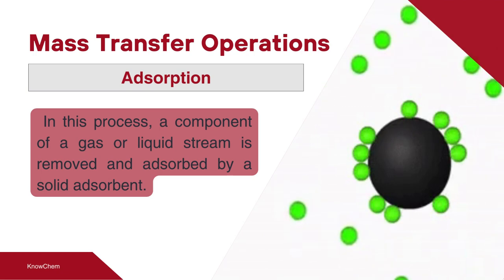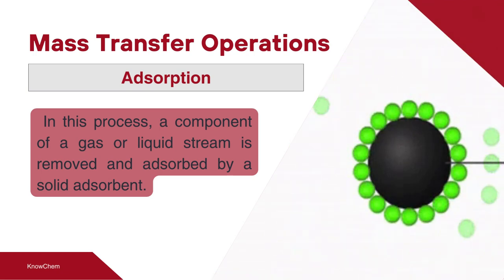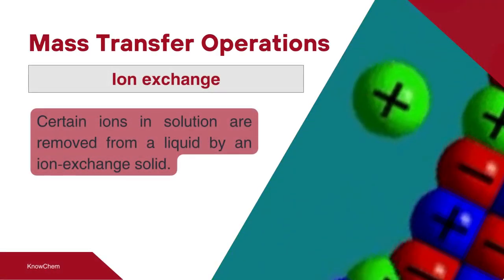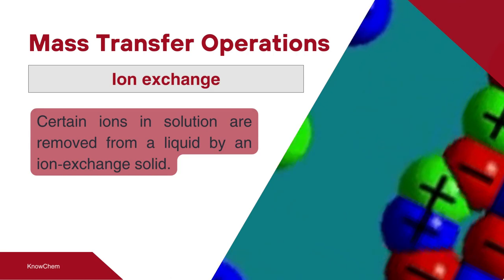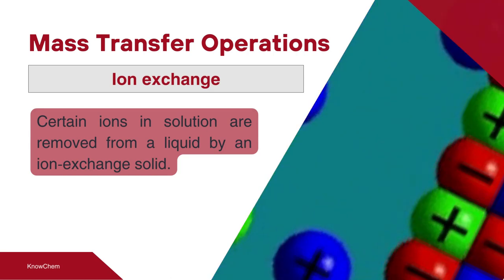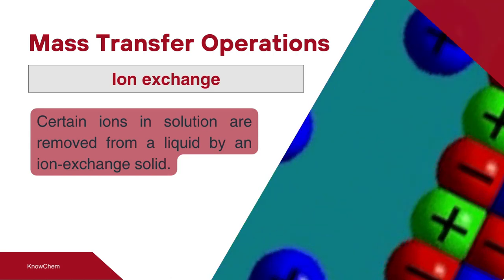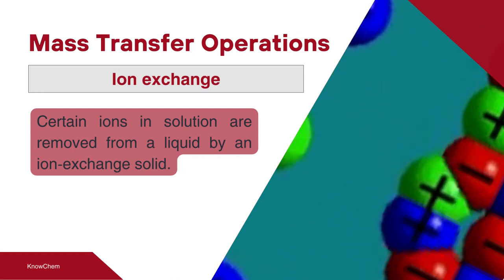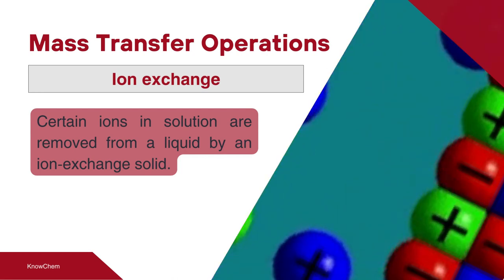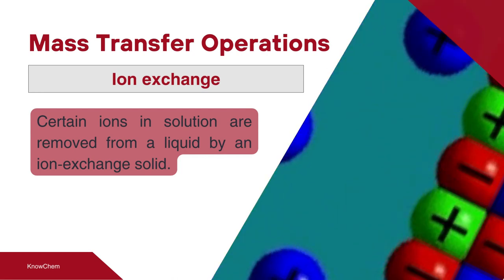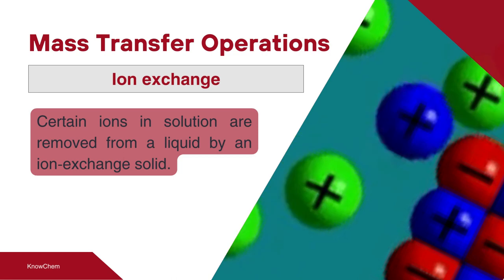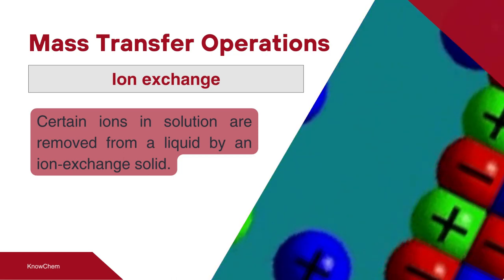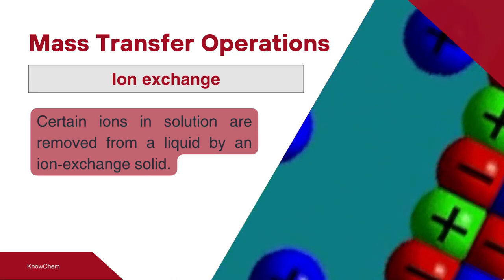The next is a critical mass transfer operation that involves the movement of substances in an ionic state. Sometimes when separation is difficult in molecular form, the removal takes place when molecules of the compound are in dissociated ionic form. This process is called ion exchange.